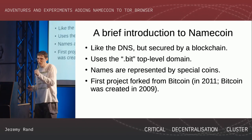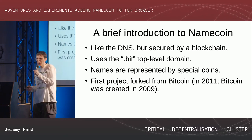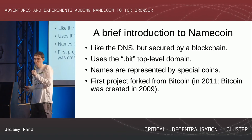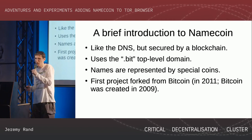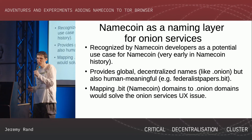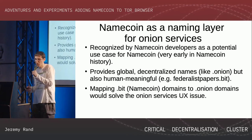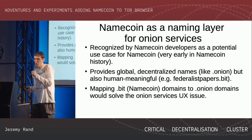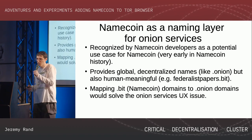For anyone who wasn't at the intro to Namecoin talk yesterday, a very brief intro: Namecoin is basically DNS but on a blockchain. We use the .bit top-level domain. Internally, the names are represented by special coins. We were the first project forked from Bitcoin, all the way back in 2011. The Namecoin developers recognized early on that using Namecoin as a naming layer for onion services was a potentially very interesting use case, providing global decentralized names that are also human meaningful — for example, FederalistPapers.bit could point to the Federalist Papers onion service. This would solve that UX issue.